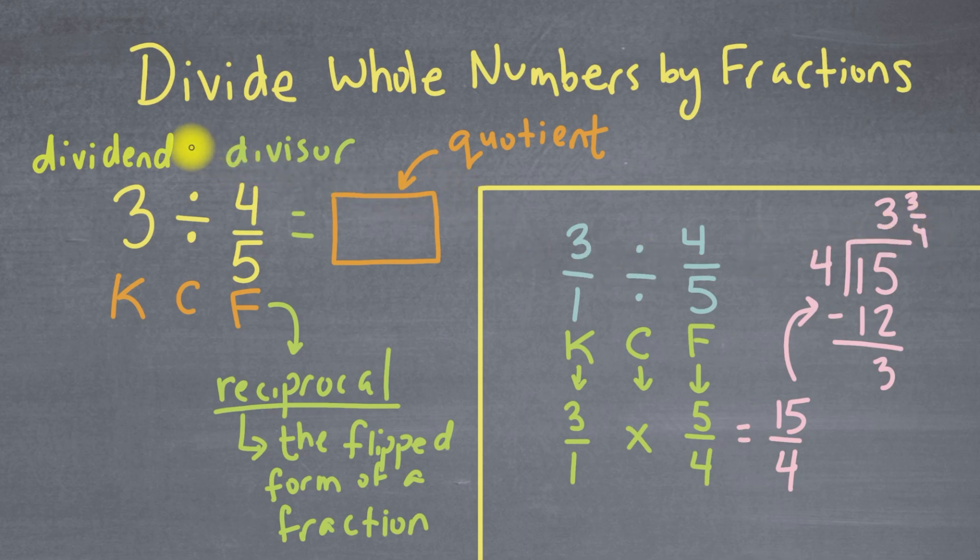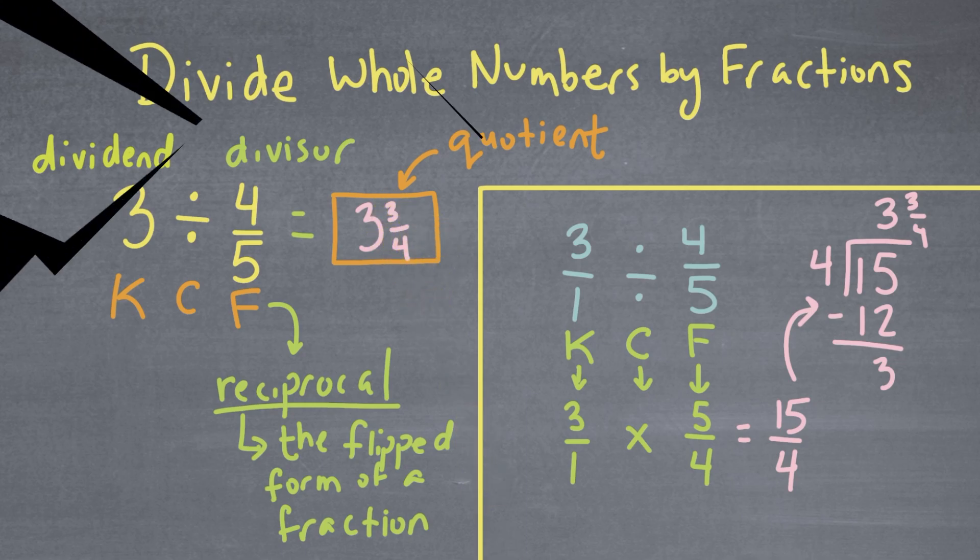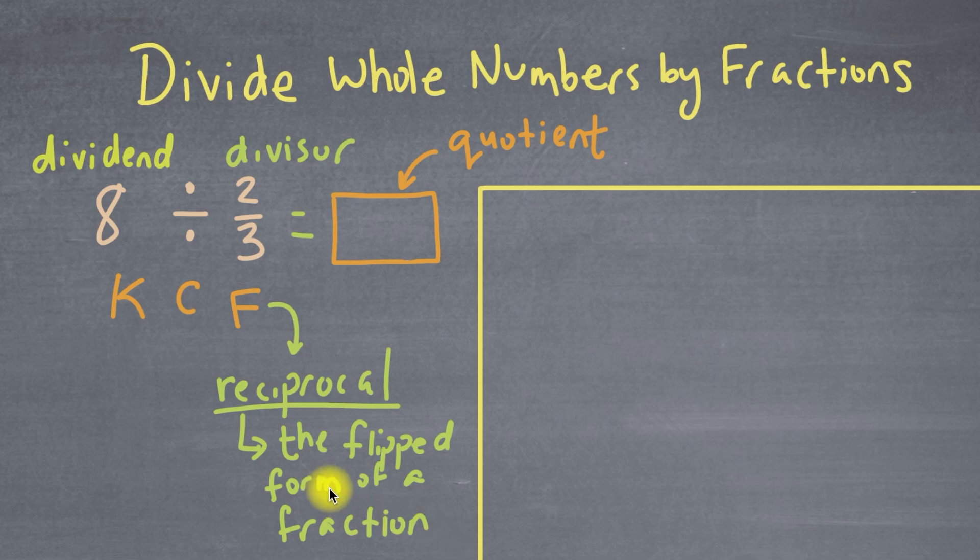So our final answer is 3 divided by 4/5 equals 3 and 3/4. So here's another example. Let's say we have 8 divided by 2/3, and we still want to find the quotient.